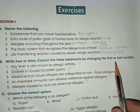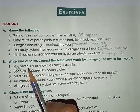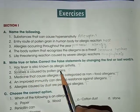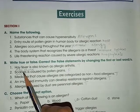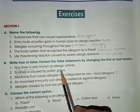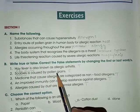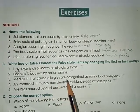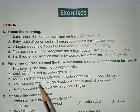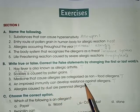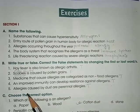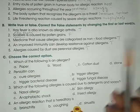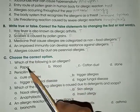Question B: True or false — correct the false statement by changing the first or last word. Hay fever is also known as allergic rhinitis — true. Scabies is caused by pollen grains — false; either write 'hay fever is caused by pollen grains' or 'scabies is caused by mites' — both answers are correct. Medicine that causes allergies is categorized as non-food allergens — true. Improved immunity can develop resistance against allergens — true. Allergies caused by dust are perennial allergies — true.